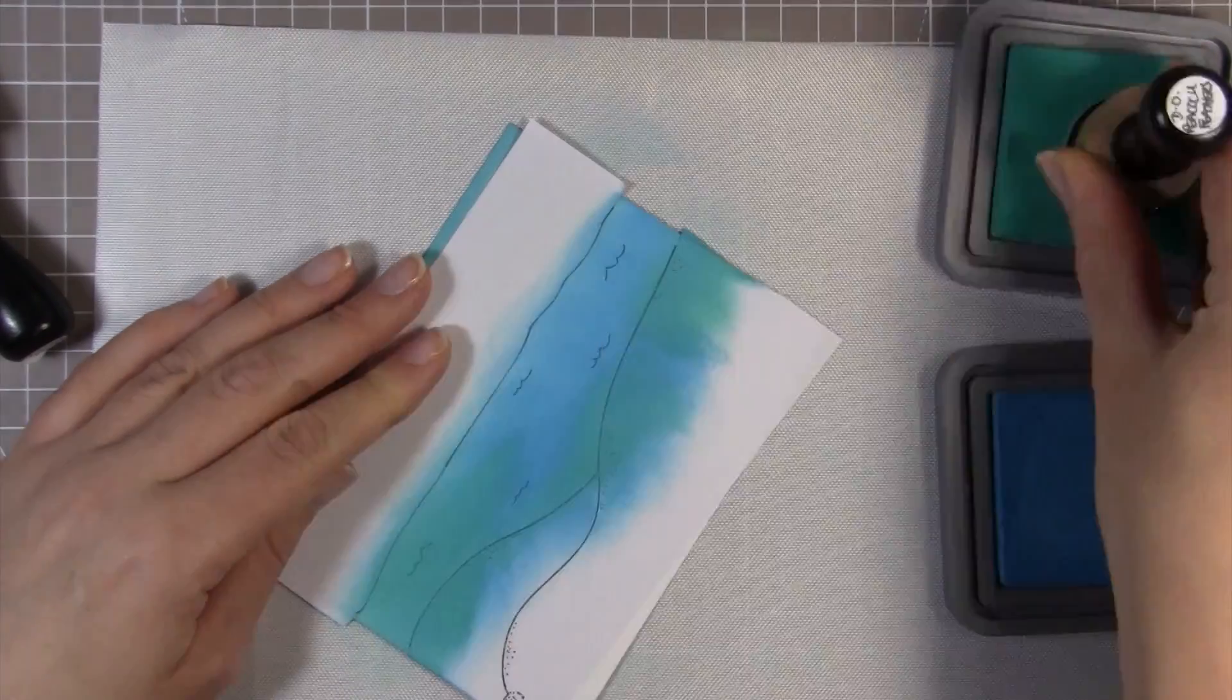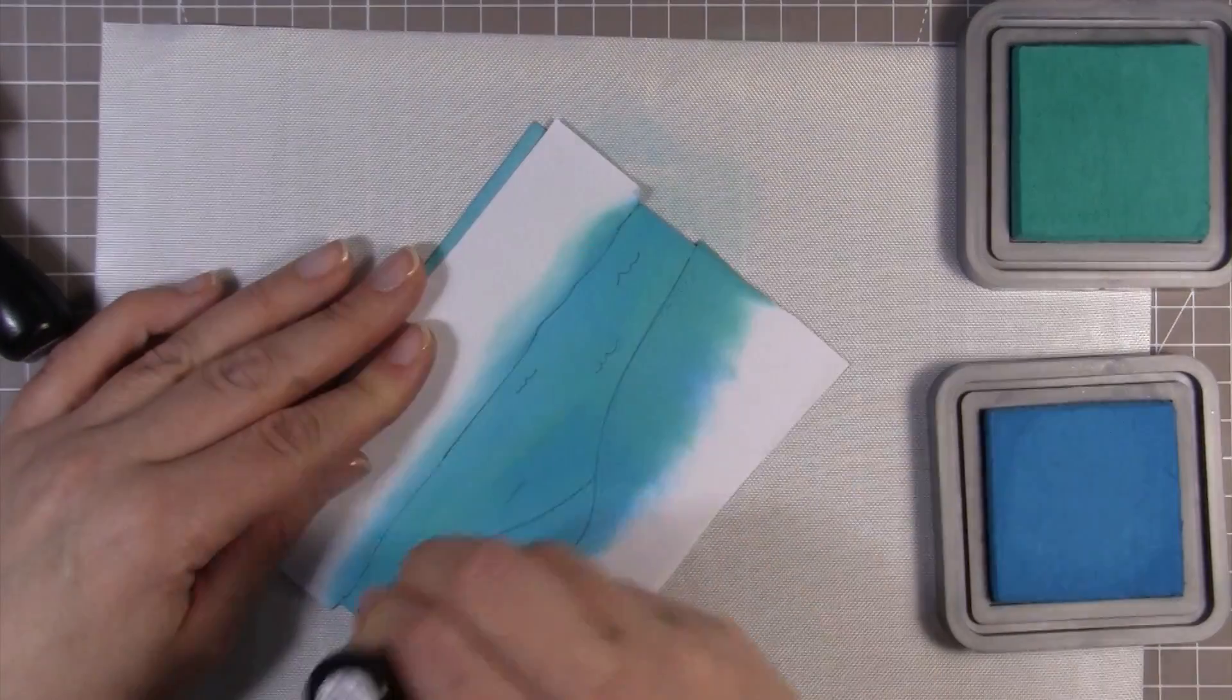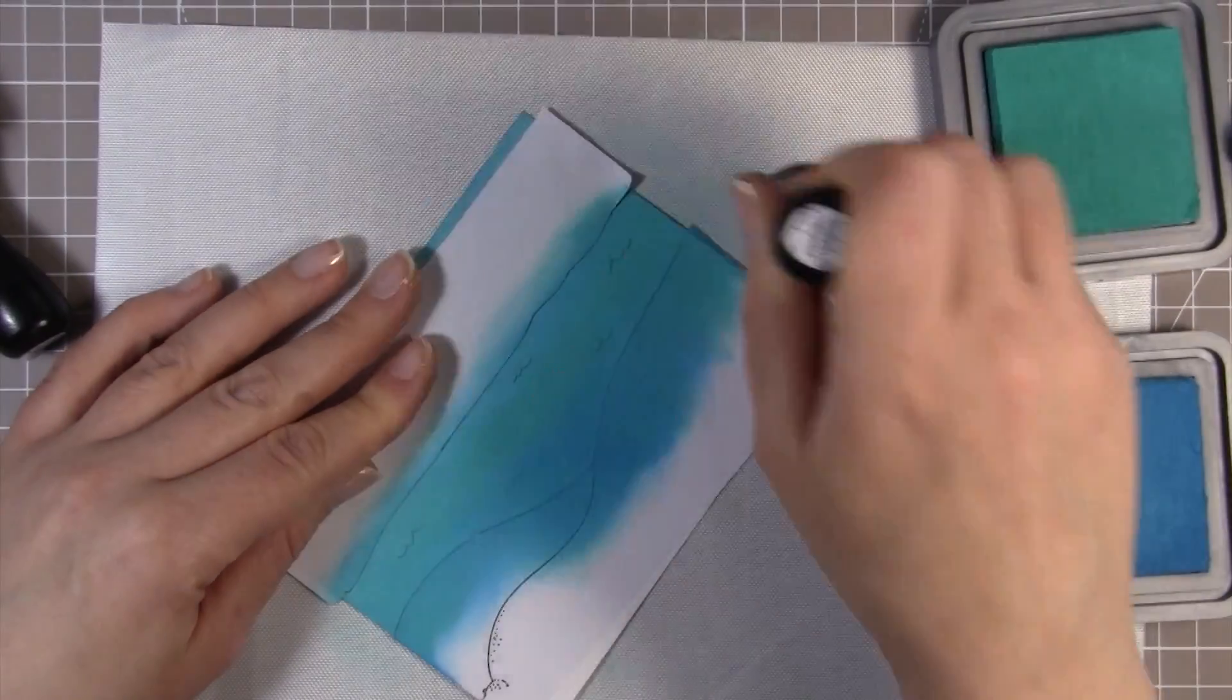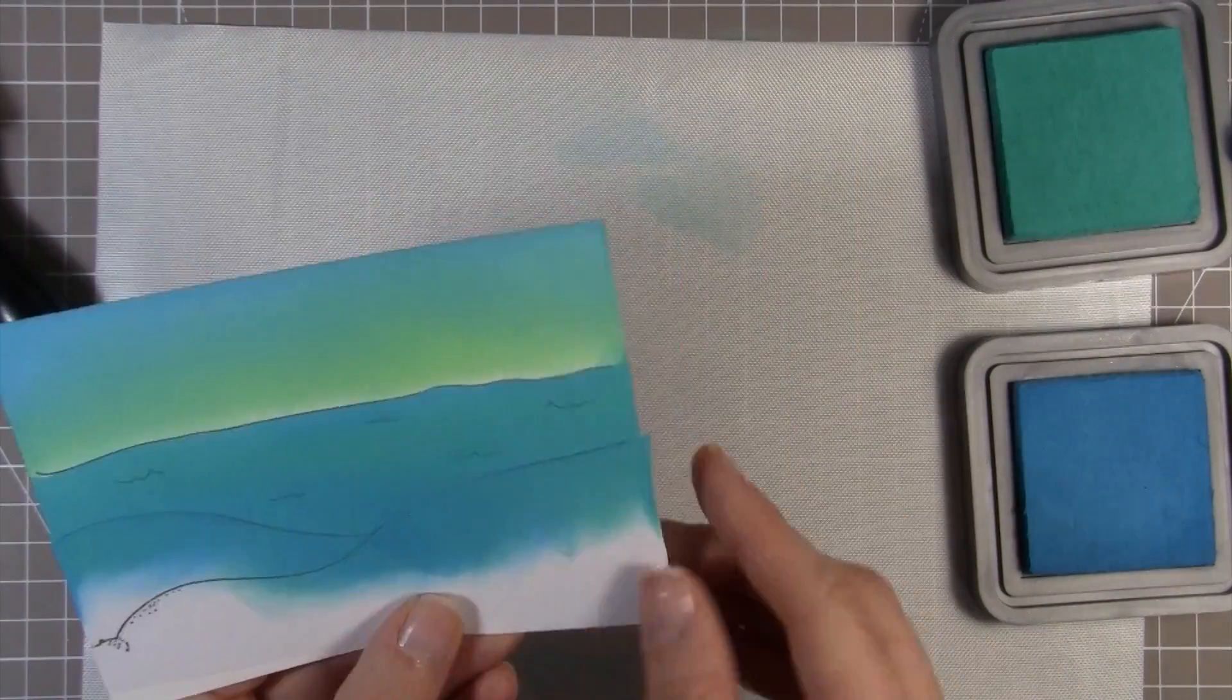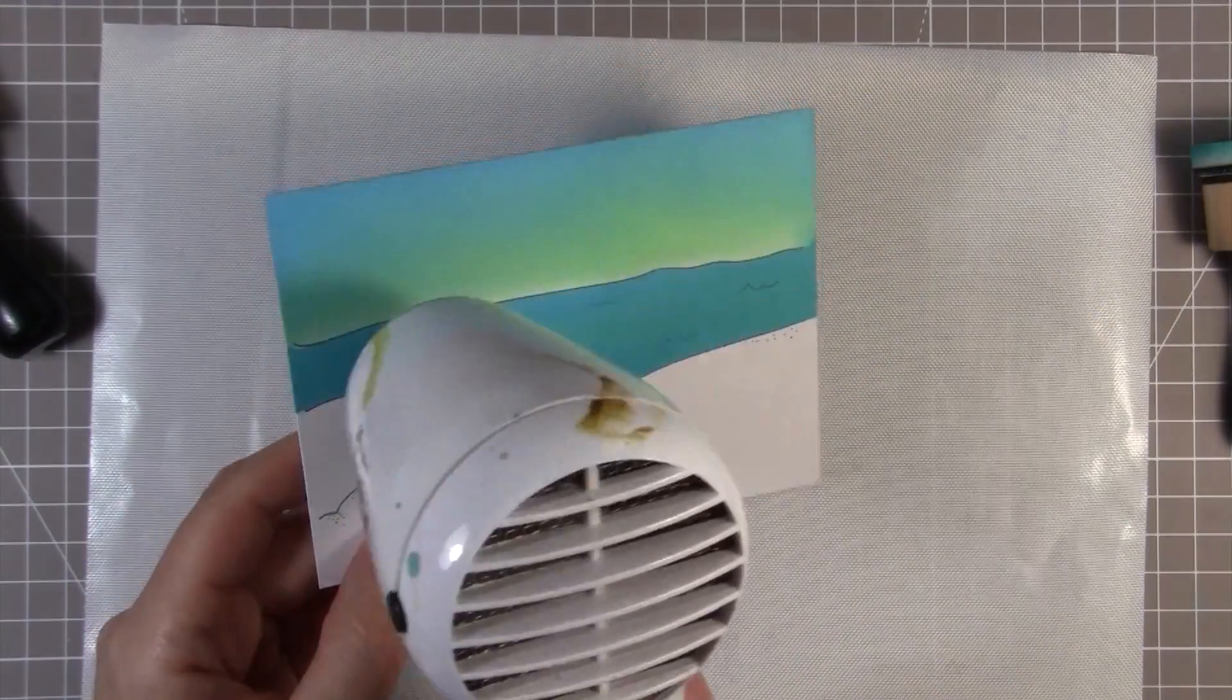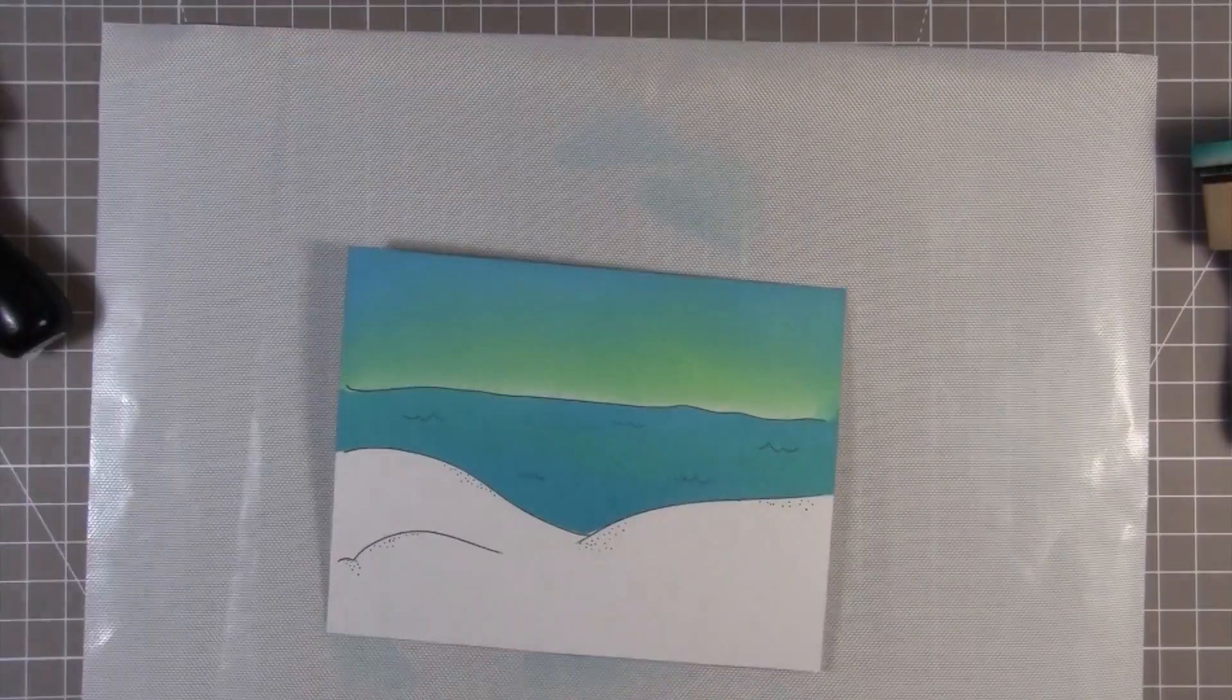I'm not including any of the Copic coloring that I did in this video simply because I already have videos that I created for the little sandcastle set and the beach backdrop, which I originally colored for the Stamping Bella website and packaging using Copic markers. I will link to those videos in the description below if you would like to see how I Copic colored those images. In the interest of keeping this video to a reasonable length, I thought it was a little redundant to add them in here.